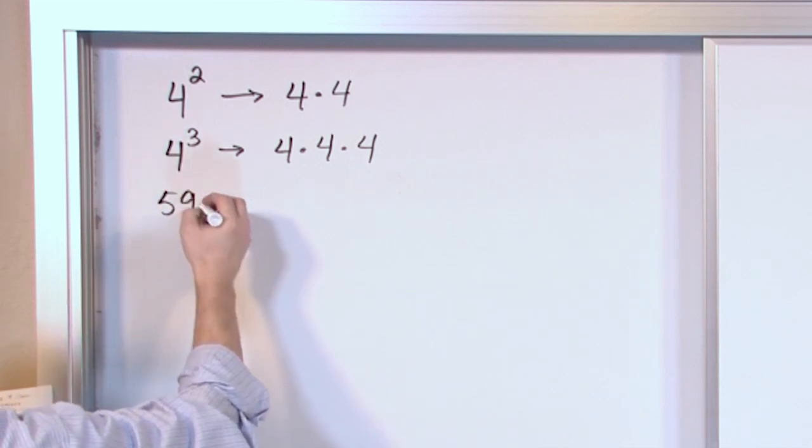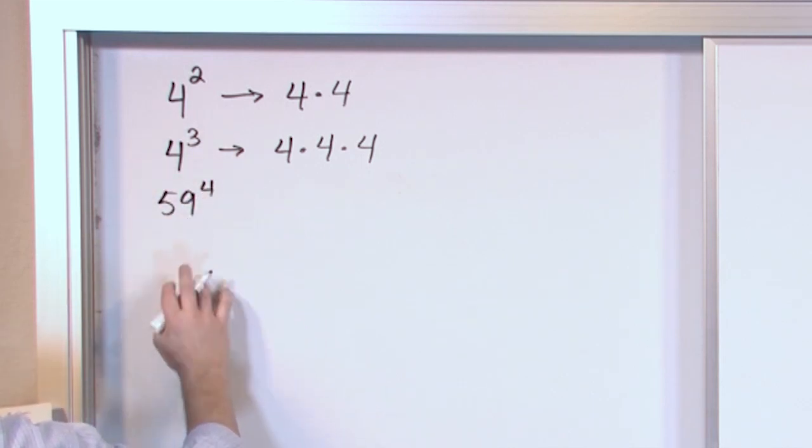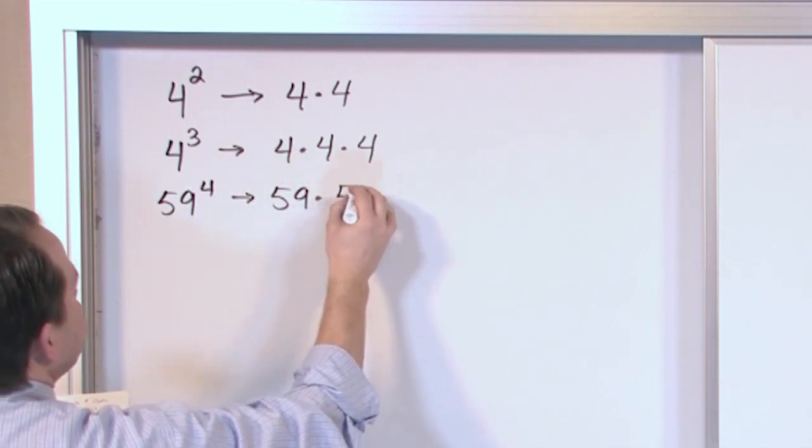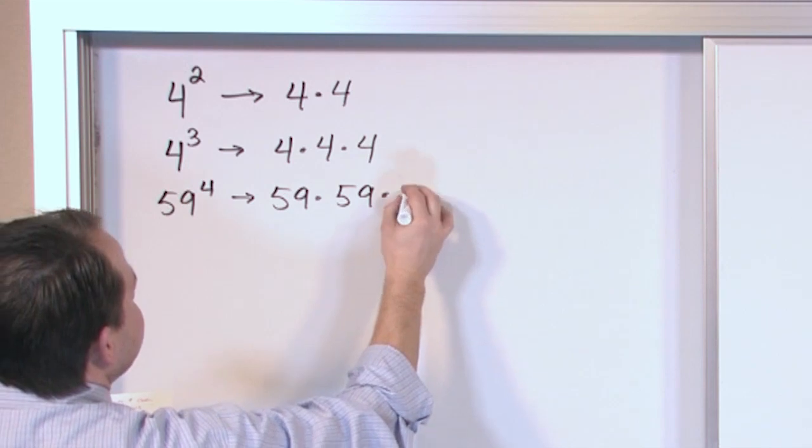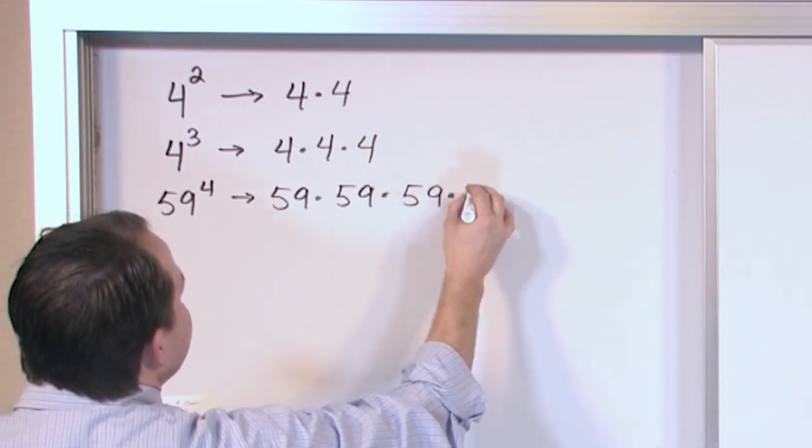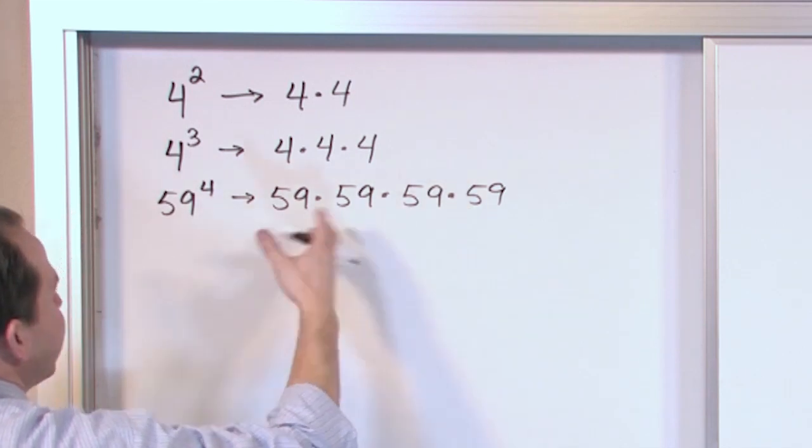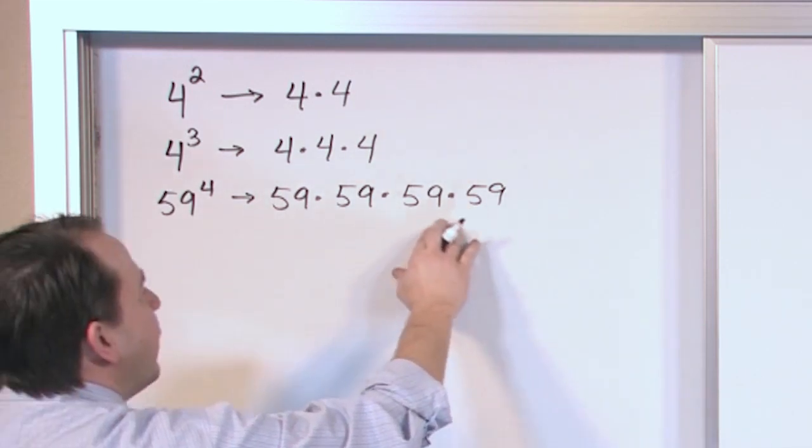It could be fifty-nine raised to the fourth power. And that would be fifty-nine multiplied by fifty-nine multiplied by fifty-nine multiplied by fifty-nine. Now this is a very large number. Take these numbers and multiply them in your calculator. You're going to get a giant number. This is why we use exponents.